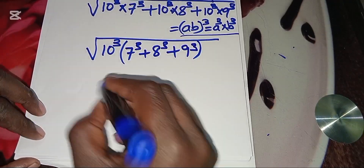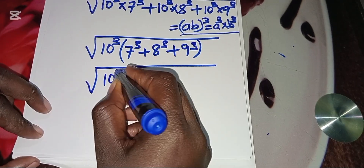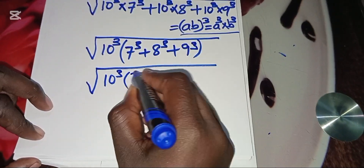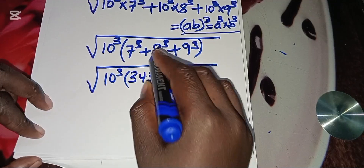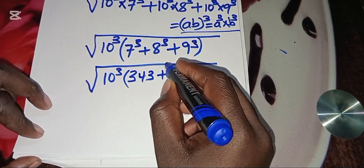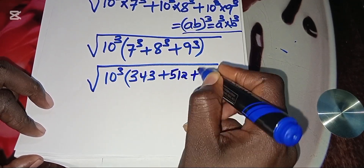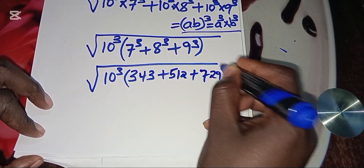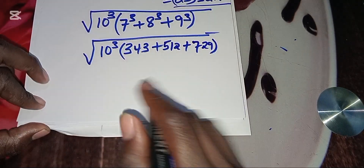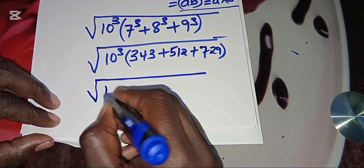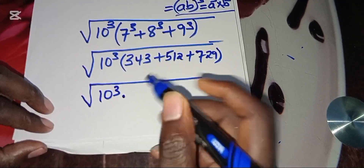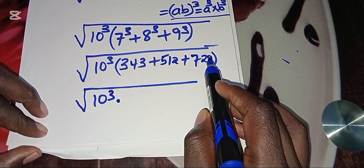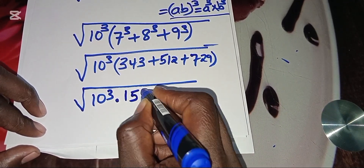Now we evaluate the bracket: 7 cubed is 343, 8 cubed is 512, and 9 cubed is 729. So we have 10 cubed multiplied by 343 plus 512 plus 729, which equals 10 cubed times 1584.